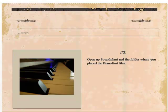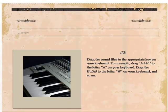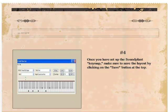Step 2: Open up Soundplant and the folder where you placed the piano font files. Step 3: Drag the sound files to the appropriate key on your keyboard. For example, drag A440 to the letter A on your keyboard, drag the B-flat to the letter W on your keyboard, and so on. Step 4: Once you have set up the Soundplant keymap, make sure to save the layout by clicking on the Save button at the top.